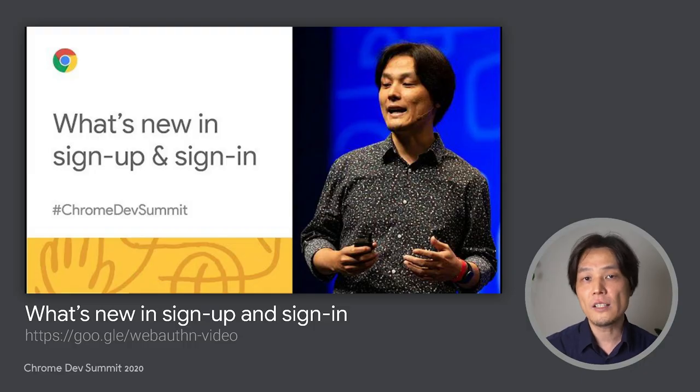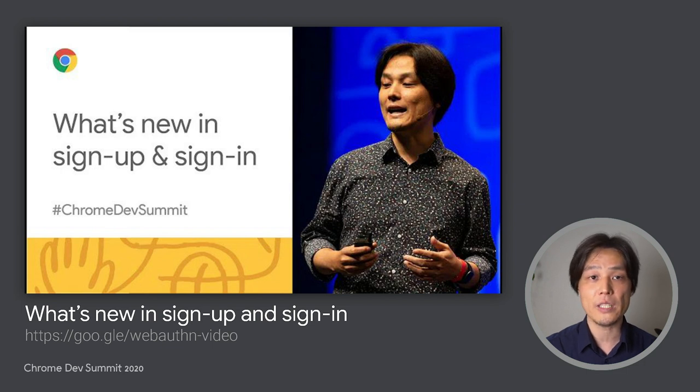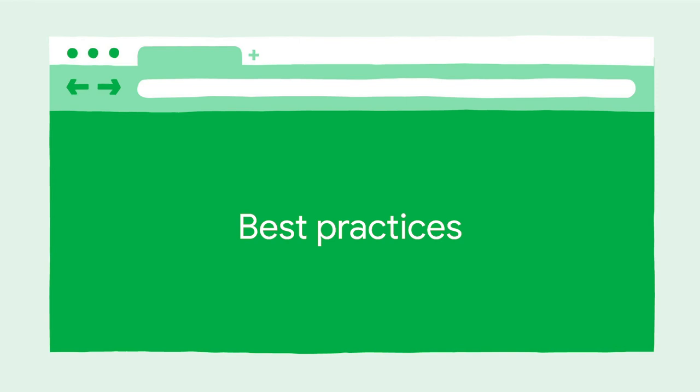Before diving into best practices, there is one caveat. Even though I'm speaking about best practices on SMS OTP forms, you should be aware that SMS OTP is not the most secure way of authentication by itself. Phone numbers are known to be recycled and sometimes hijacked, and the concept of OTP itself is not phishing resistant. If you are looking for better security, I would recommend using web authentication. You can learn more from the talk I gave at the Chrome Dev Summit last year. With that in mind, let's dive into SMS OTP form best practices.